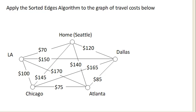Okay, so now let's try applying the sorted edges algorithm to our travel cost graph here. Let's go ahead and start by listing all of the edges from cheapest to most expensive. The cheapest one we have is Seattle to LA with a cost of 70.